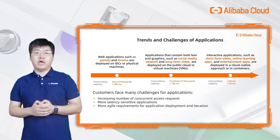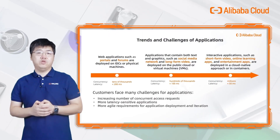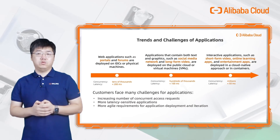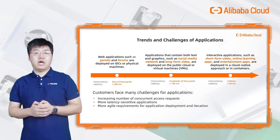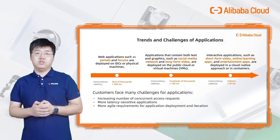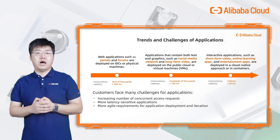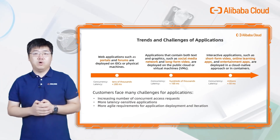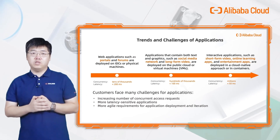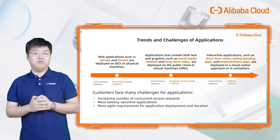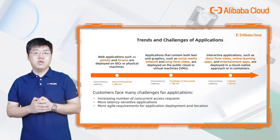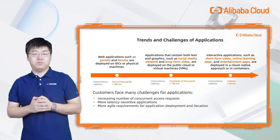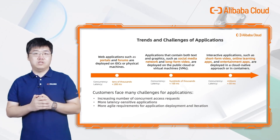As we know, applications have evolved over the past few years — from portals to social networks, from long-form video to short-form video and even live streaming. Applications are facing challenges and putting forward higher demands on infrastructure. The application delivery network needs to carry greater concurrency while keeping latency low, and applications also need to iterate quickly to provide a better digital experience.